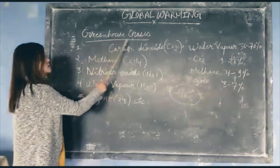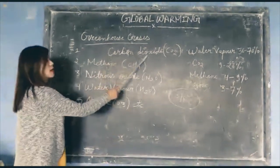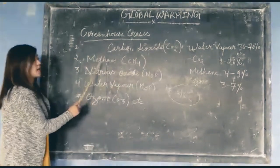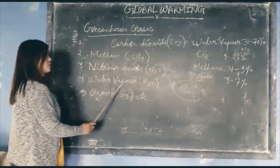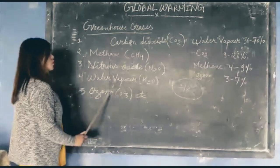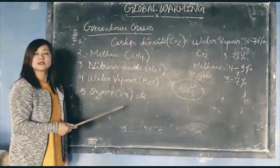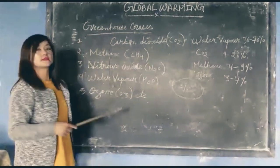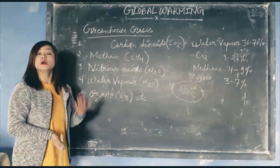And the answer is greenhouse gases. There are many greenhouse gases like carbon dioxide (CO2), methane (CH4), nitrous oxide (N2O), water vapour (H2O), ozone (O3), etc. These greenhouse gases are maintaining or balancing the temperature of our earth.